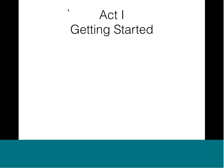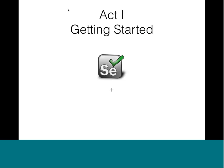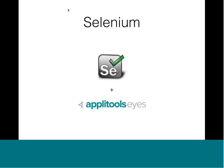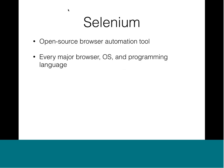Act one: getting started with Selenium and Applitools Eyes. Selenium is an open source browser automation tool — it's the de facto option as far as open source test automation is concerned. It works on every major browser, operating system, and programming language. The main thing that's really cool about it is that it mimics human action. That's the main focus and the fundamental perspective you need to have when using the tool.